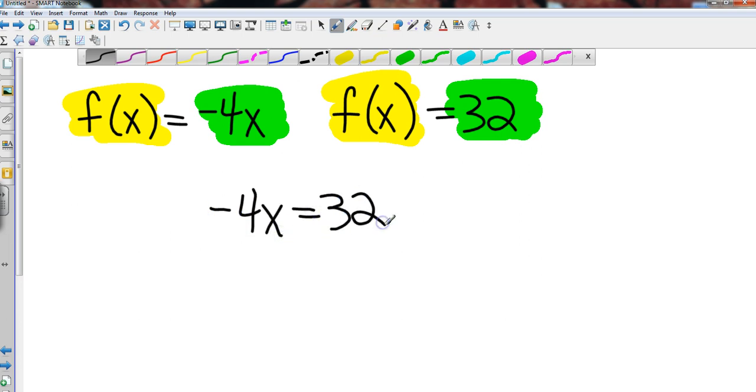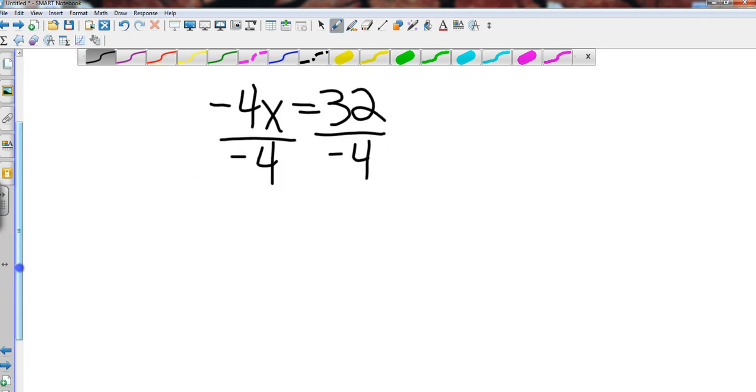So all I do is simply take negative 4x and I set it equal to the 32, and I solve my one-step equation by dividing both sides by negative 4. And 32 divided by negative 4 gives me a value of negative 8.